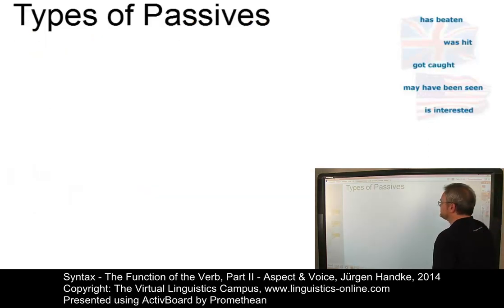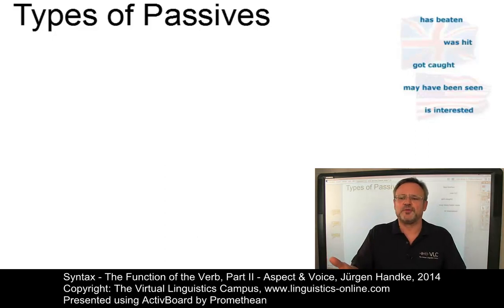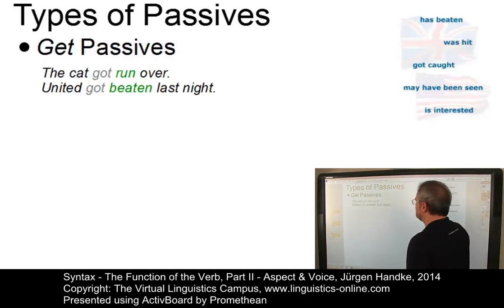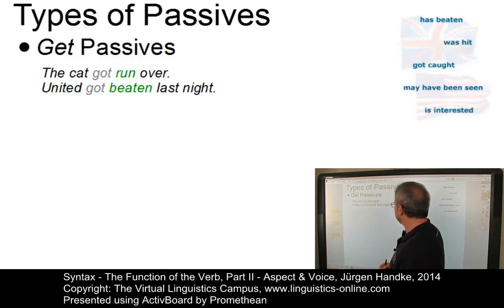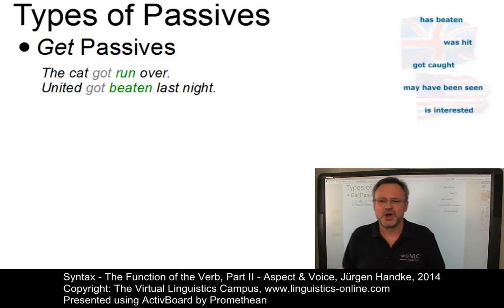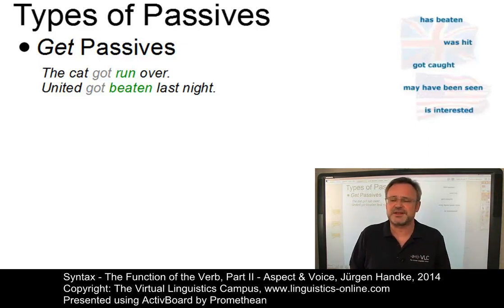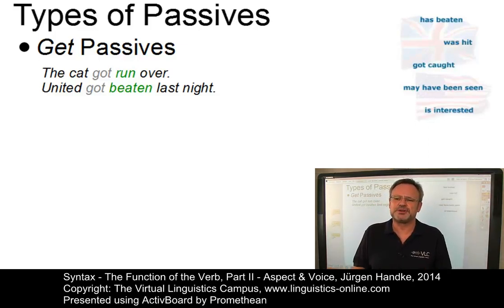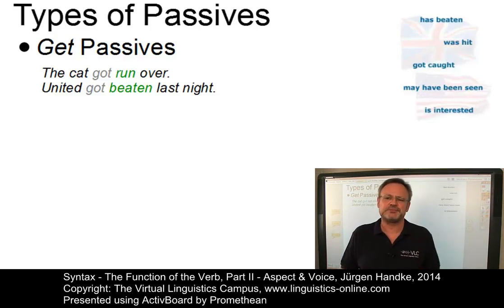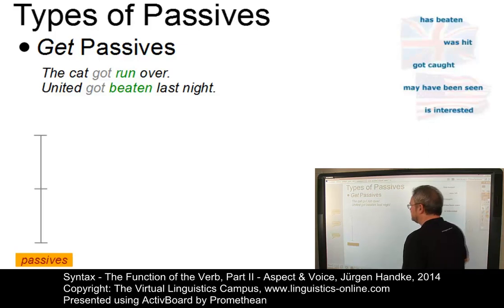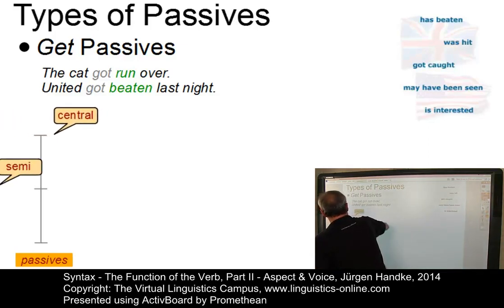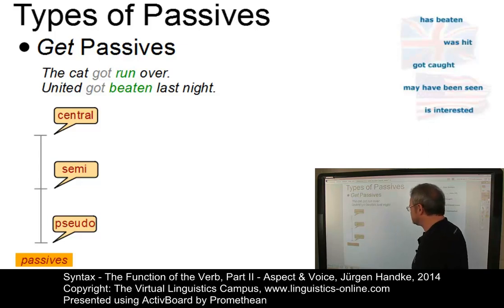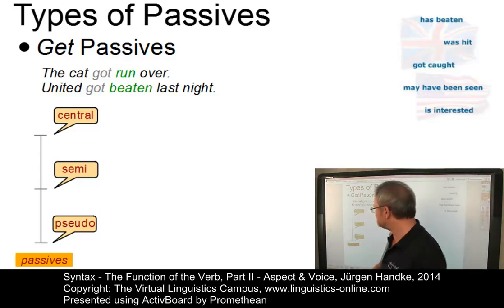One alternative form is the use of get, which is not an auxiliary at all. Here are some get-passives: The cat got run over; United got beaten last night. Also, the purely formal definition of the passive — be and get plus past participle — is very broad and would include far too many examples. For this reason, the following passive gradients can be defined: central passives, semi-passives, and pseudo-passives.